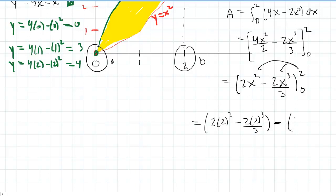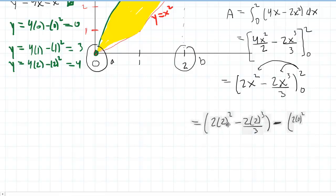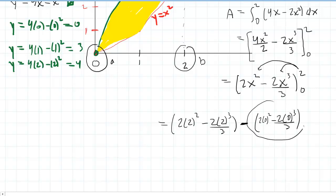Now you should note that it's all going to 0 out because you're going to have 2 times 0 squared minus 2 times 0 cubed all over 3. All of this will equal 0. So we can actually ignore this term and just focus on simplifying this.